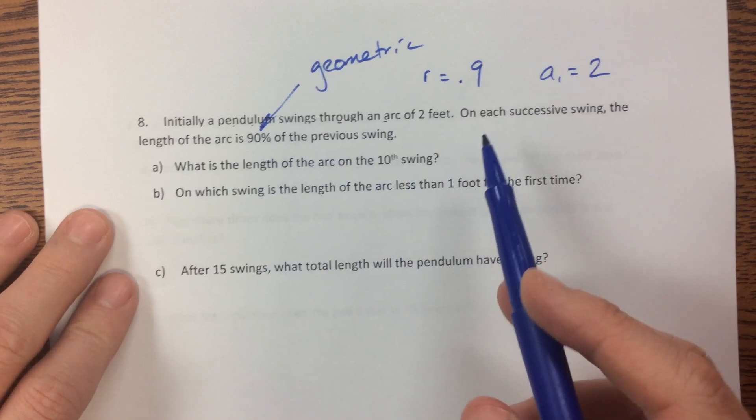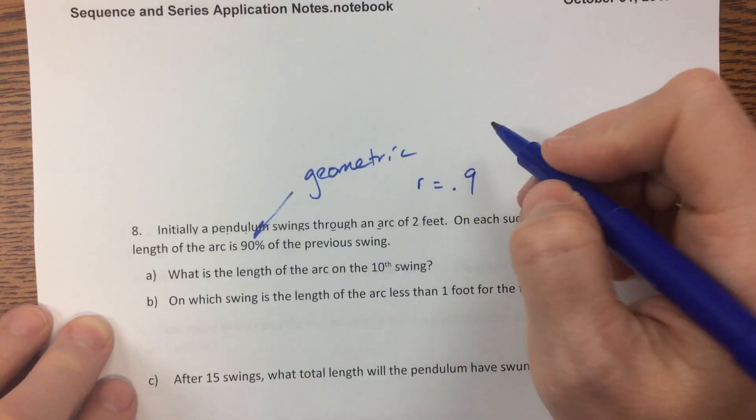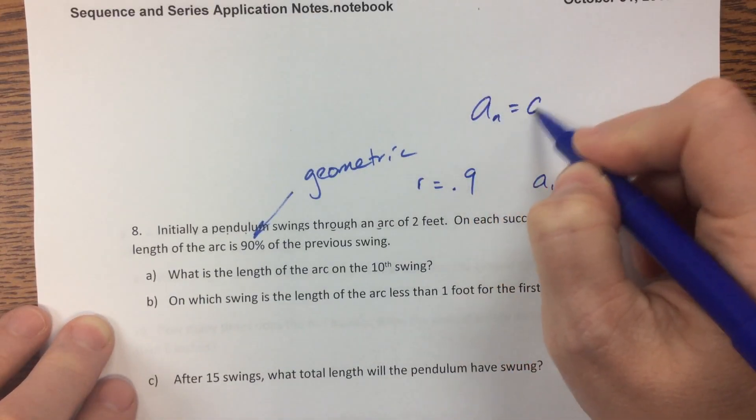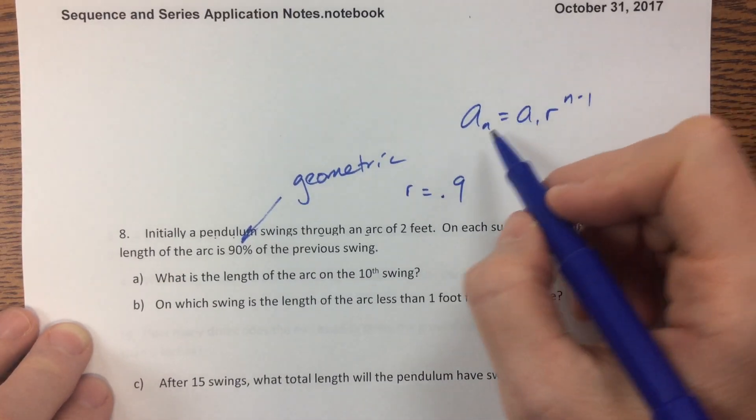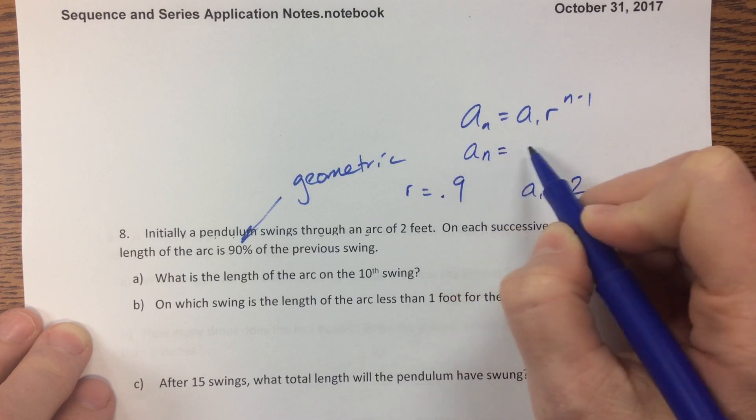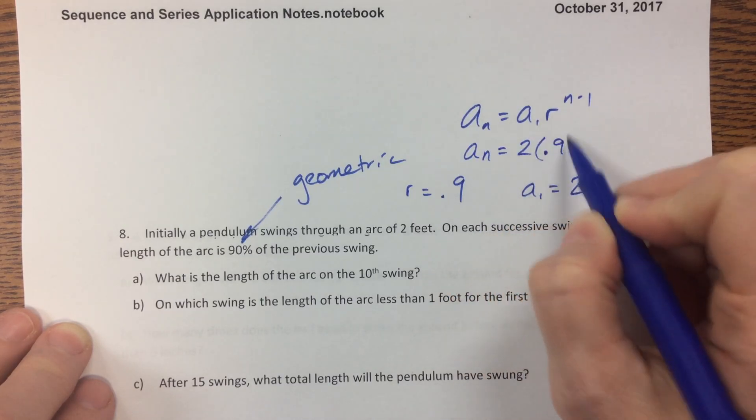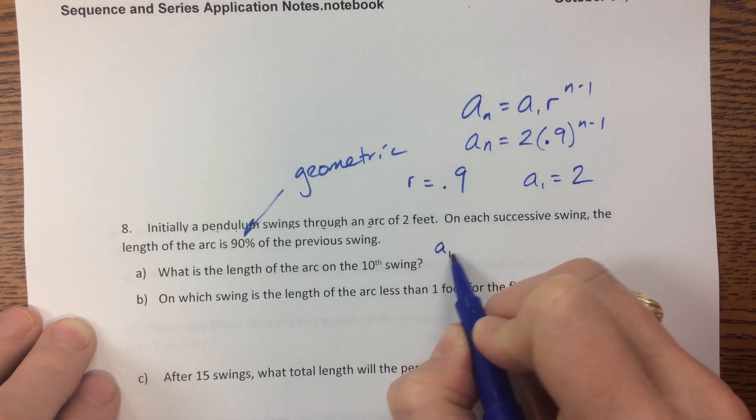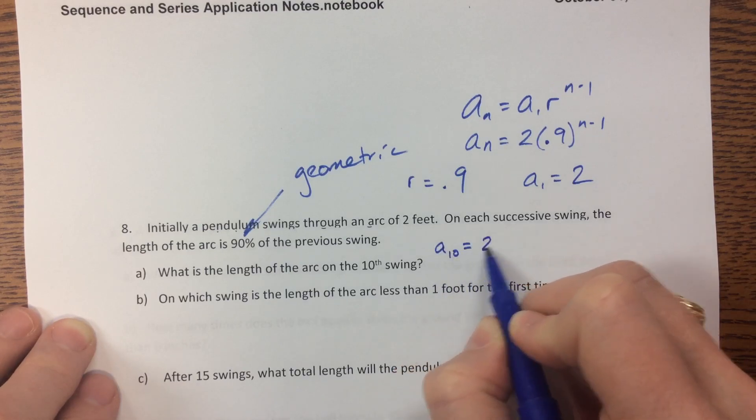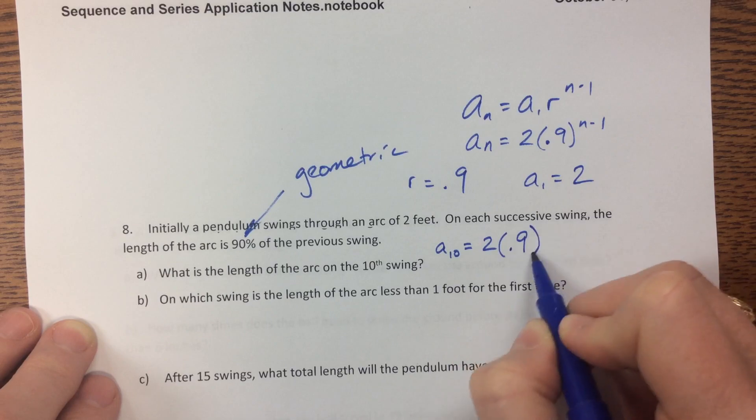So what is the length of the arc on the 10th swing? Well, our formula would be a sub n equals a sub 1 times r to the n minus 1 in general for geometric sequence. So a sub n equals 2 times 0.9 to the n minus 1. So a sub 10 is equal to 2 times 0.9 to the ninth.